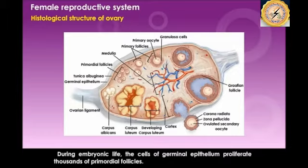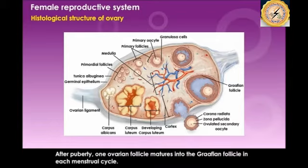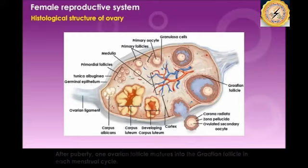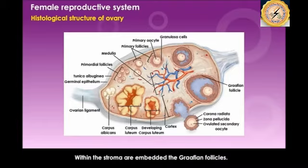During embryonic life, the cells of the germinal epithelium proliferate to form thousands of primordial or primitive follicles. The central region — the stroma — is composed of connective tissue and contains thousands of tiny undeveloped ovarian follicles. After puberty, one ovarian follicle matures into the Graafian follicle in each menstrual cycle, and the stroma contains embedded Graafian follicles from which the ovum is released.